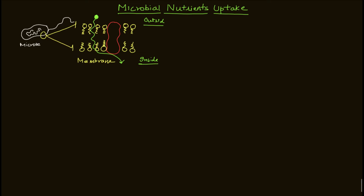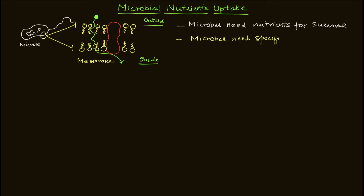There are a few key points regarding microbial nutrients. First, microbes need nutrients for their survival — as do all cell types. Second, microbes need specific compounds, and the requirement for those compounds varies, so there will be different types of mechanisms for every kind of nutrient. Third, there must be some unwanted substances generated inside the cell that should move from inside to outside, so there must be a mechanism for that as well.